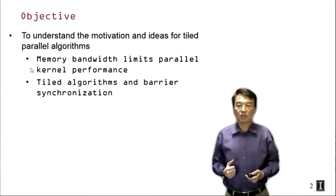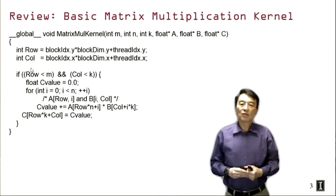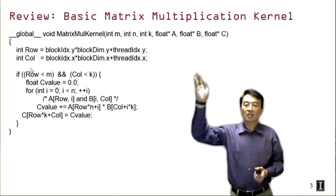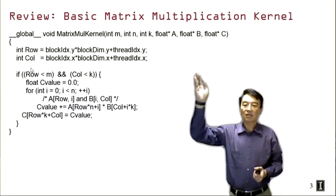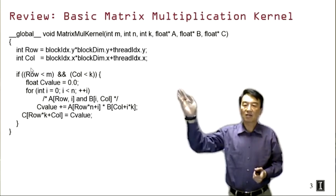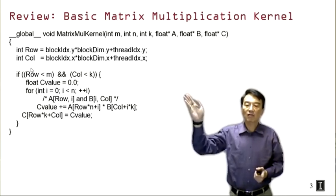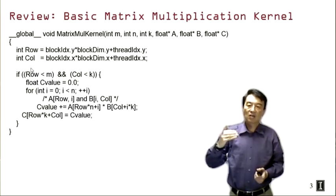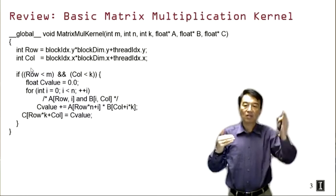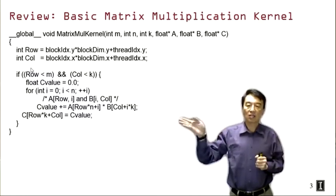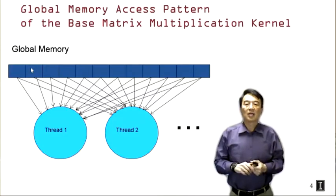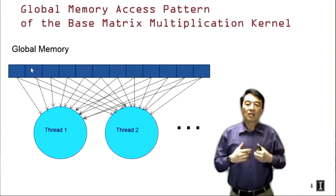Here's a quick review of the basic matrix multiplication kernel. We have the block and thread index to data mapping, a test of value range, and then a for loop where each thread accesses one row of matrix A and one column of matrix B, and we accumulate the dot product result and eventually write into the C element.